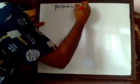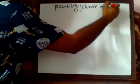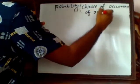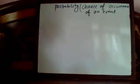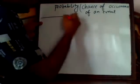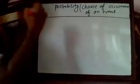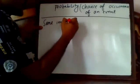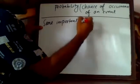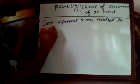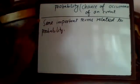Probability means chance — the chance of occurrence of an event. Now let's look at the statistical definition of probability and some important terms related to probability.